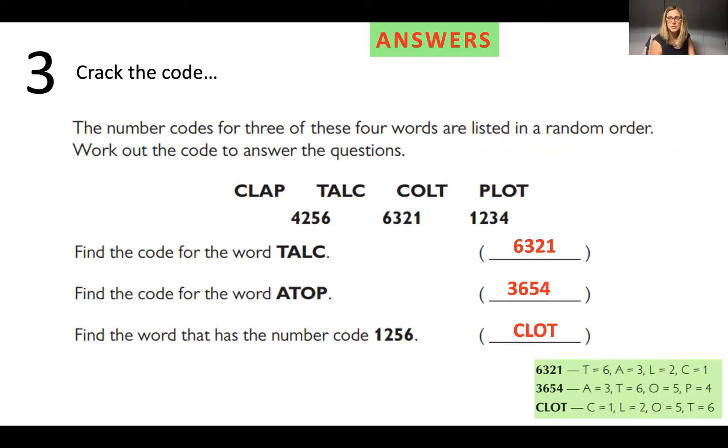So that helps me because it tells me that L is two. Once I know that L is two, I need a code where the third digit is L. In this case, the third digit is two. So in this case, six, three, two, one.